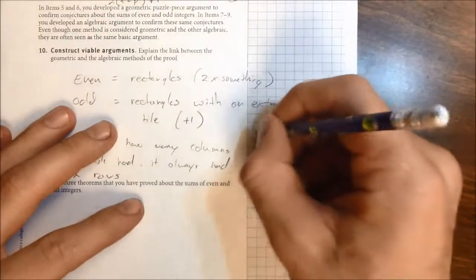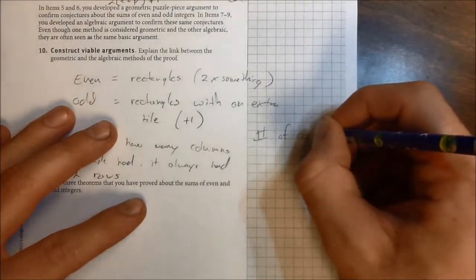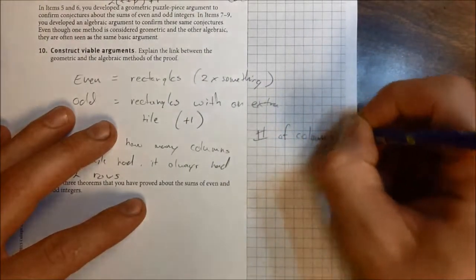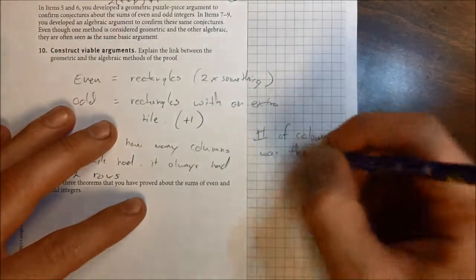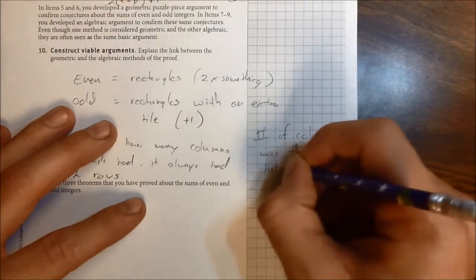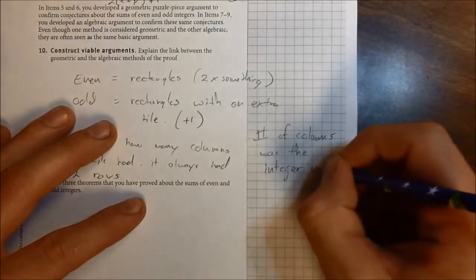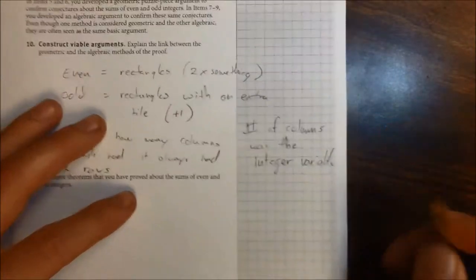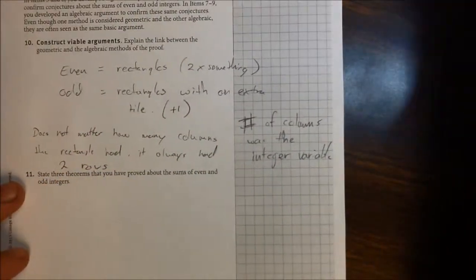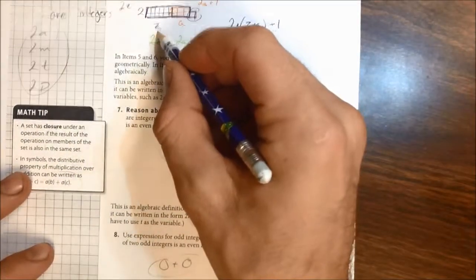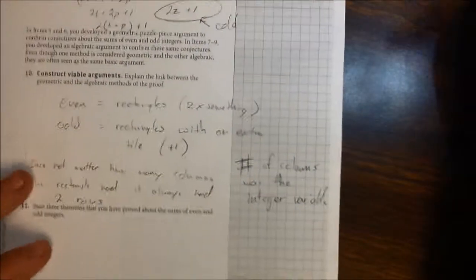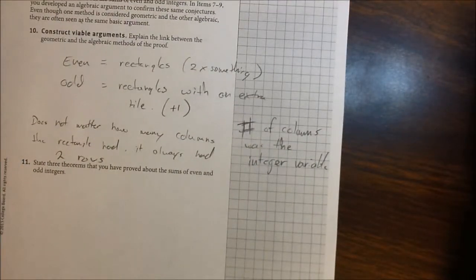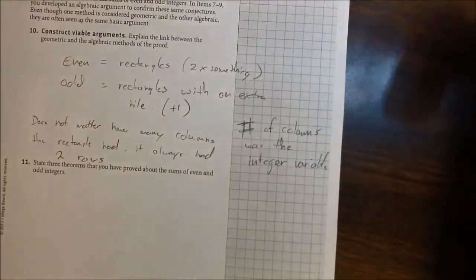The number of columns was the variable, the integer variable, right? The number of columns was the number of integers, and so that's why way back here, I put that it had Z columns, this had A columns, and so on and so forth. So the number of columns were just those integers. But yeah, so there is a bunch.